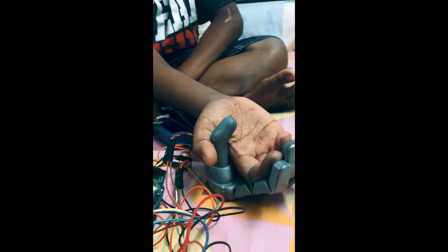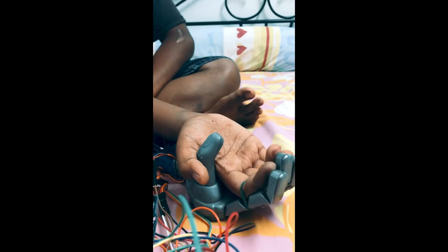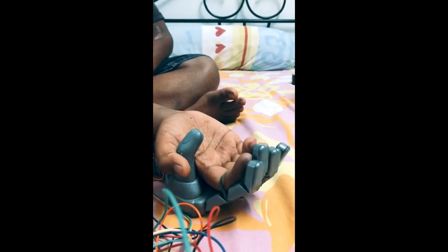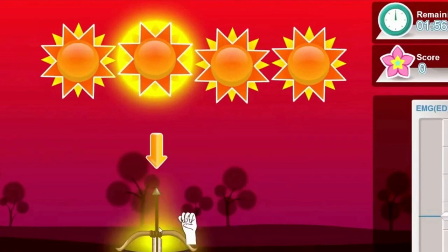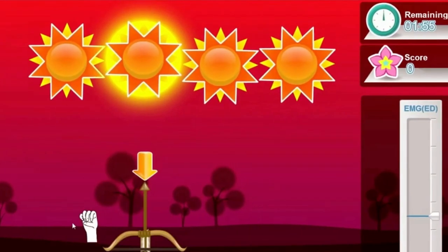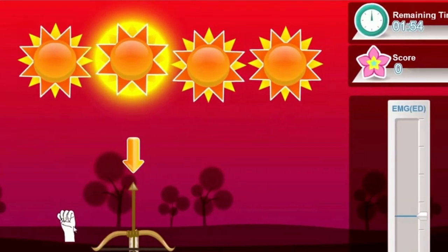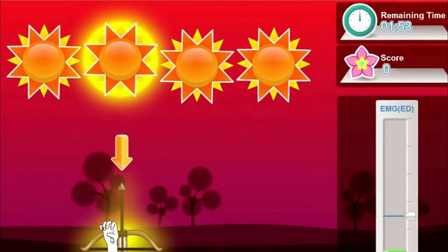The games lead patients to do more reaching and grasping and more hand motion as well. For example, a game which simulates shooting an arrow to the sun. The patient is required to open their hand to discharge the arrow. That is how we encourage the patients to use their entire upper limb more during training.